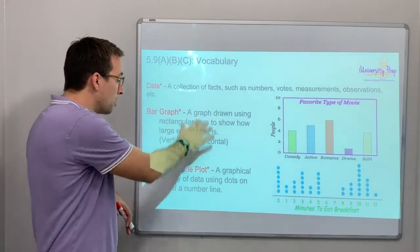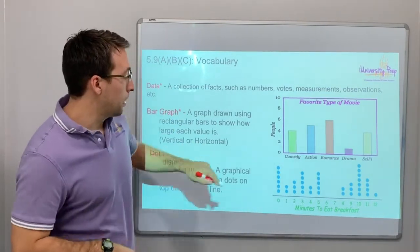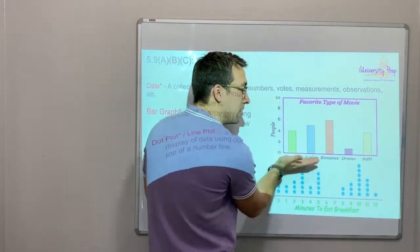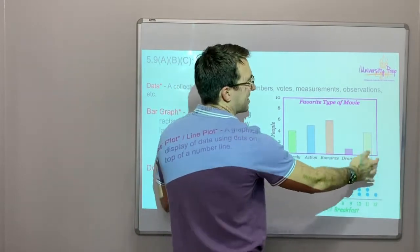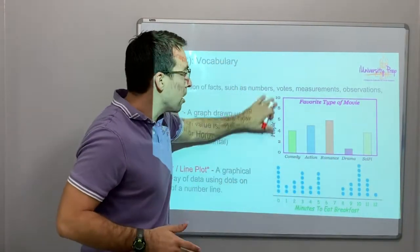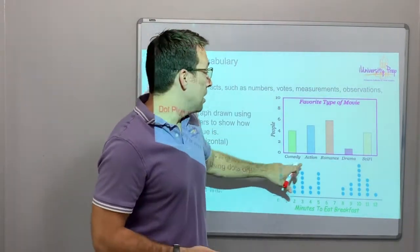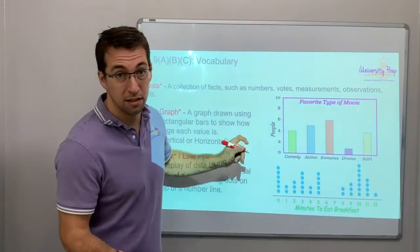Notice with these graphs you're going to compare your x-value. So here, romance, types of movies, right? Romance, drama, sci-fi. And then the number of people that like those types of movies. So action is the second most popular to romance. So maybe there are more girls that took this quiz or answered this poll than boys.